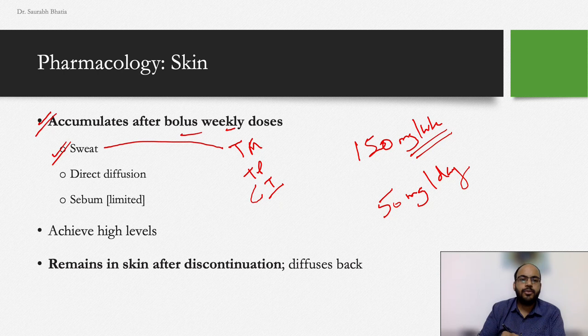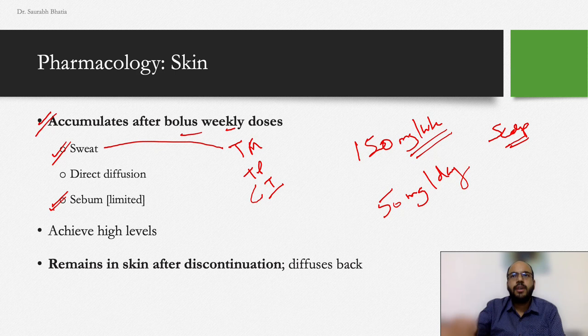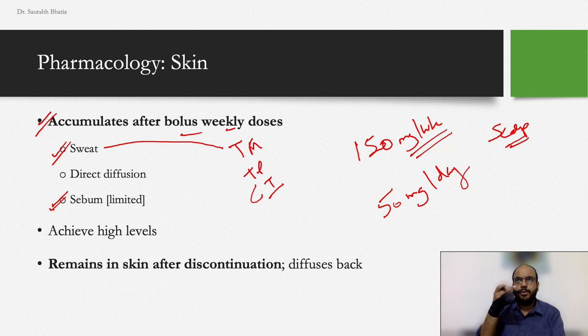However, fluconazole reaches the skin very limitedly through sebum. So for seborrheic areas like the scalp, fluconazole is not that good. If you want to treat fungal infections in seborrheic areas, switch to itraconazole, which has much better sebum mobility. Keep fluconazole for areas that are more sweaty or flexural.